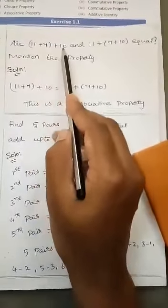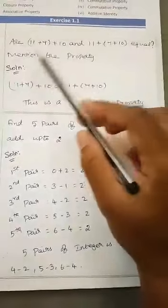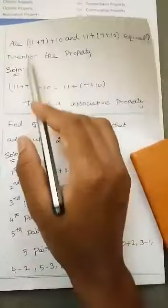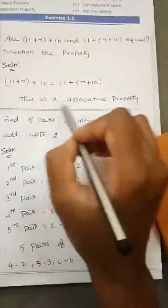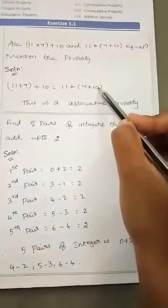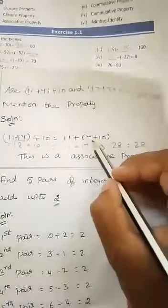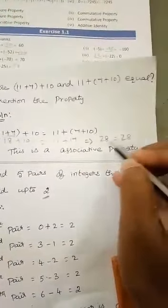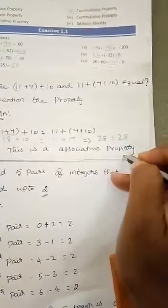Sixth one is 11 plus 7 plus 10 and 11 plus 7 plus 10 equal. Mention the property. We are going to mention this property. The given question is 11 plus 7 plus 10 is equal to 11 plus 7 plus 10. This is the associative property. 11 plus 7 is 18 plus 10. 11 plus, 7 plus 10 is 17. Next, 18 plus 10 is 28. 11 plus 17 is 28. So, both are in same. So, associative property is proved.